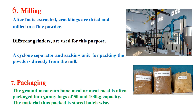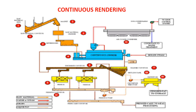The final step is packaging: the ground meat-cum-bone meal or meat meal is often packaged into gunny bags of 50 kg or 100 kg capacity, stored batch-wise for further use or marketing. The third method, continuous low temperature rendering, connects all steps through a continuous process using conveyors. Material is loaded in the first chamber, undergoes initial grinding, then cooking, followed by direct fat separation. The solid portion undergoes drying and then grinding, and finally the product comes out at the other end.